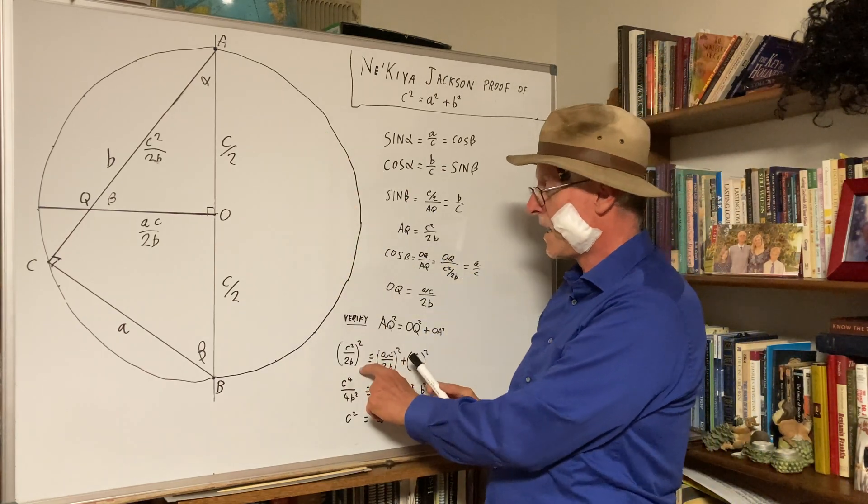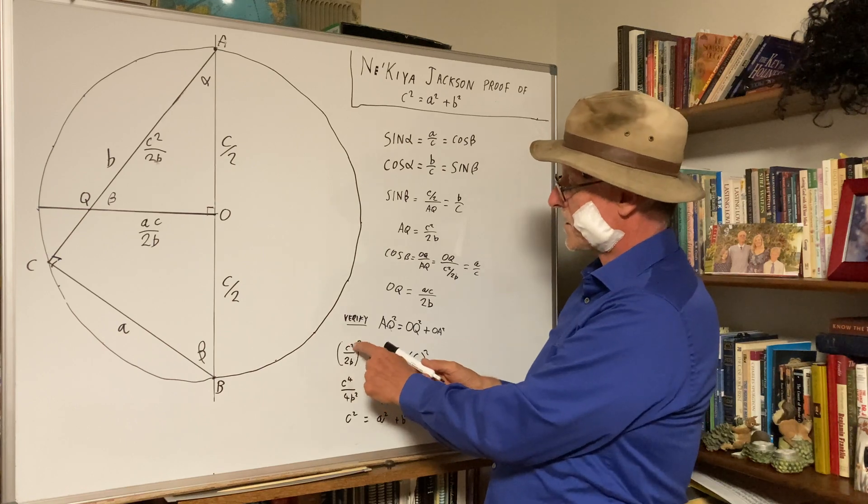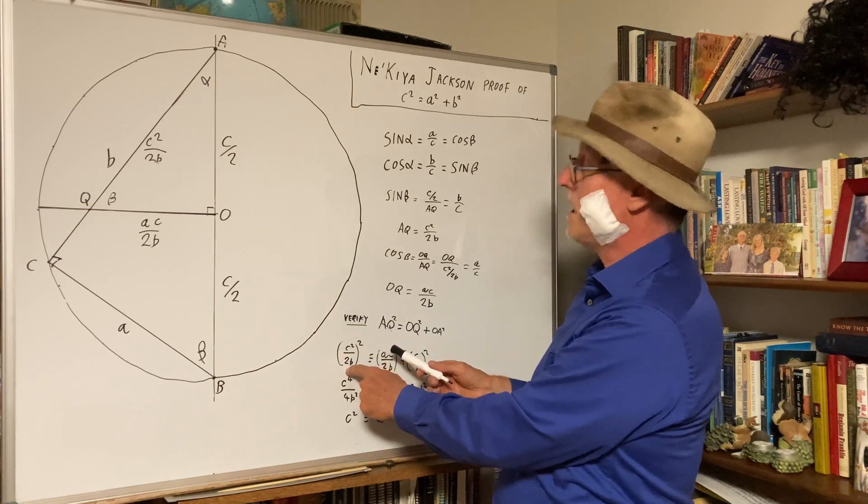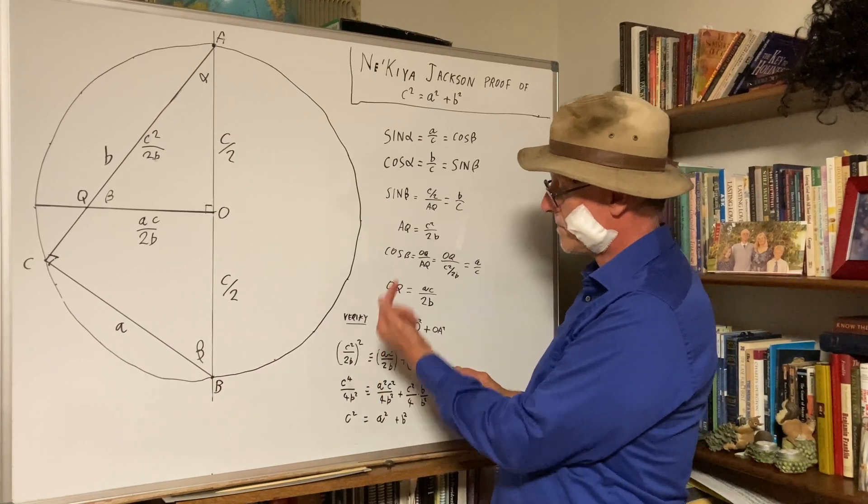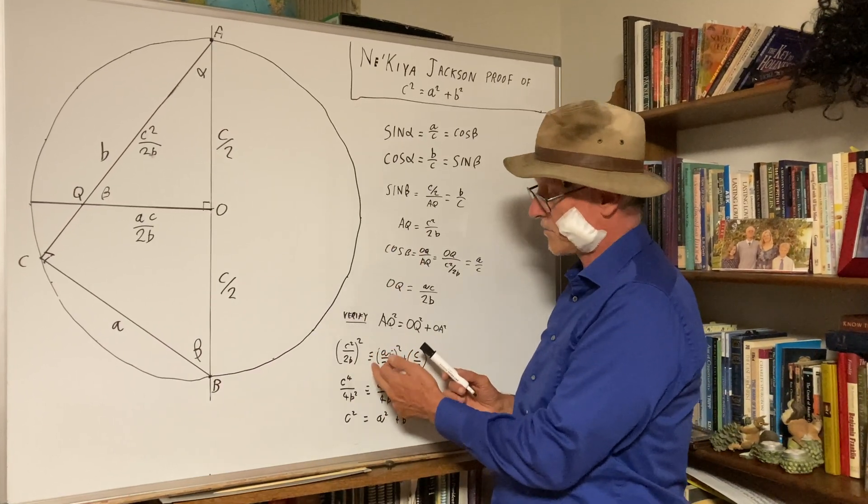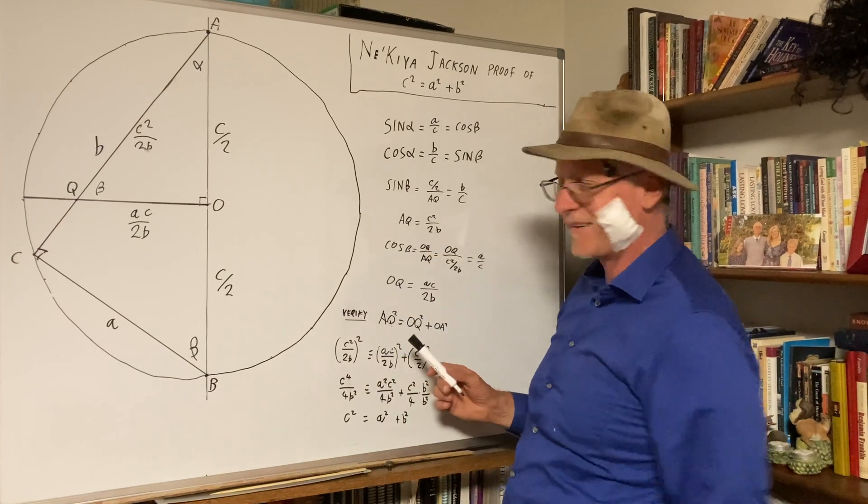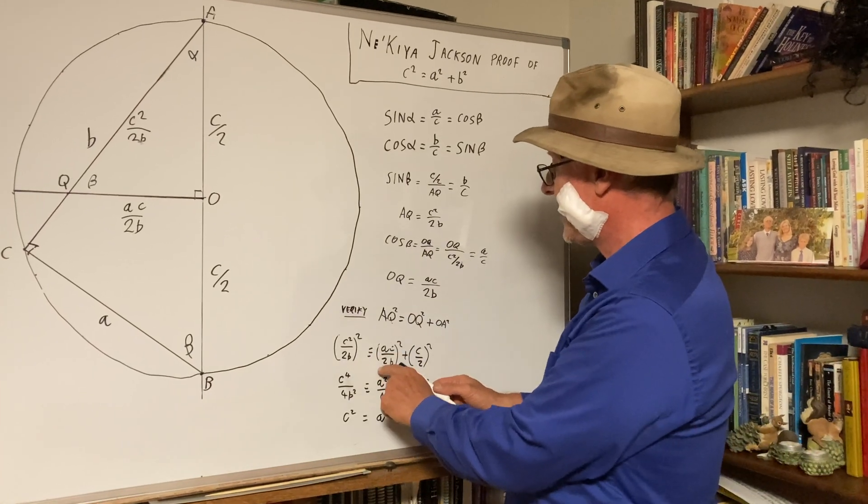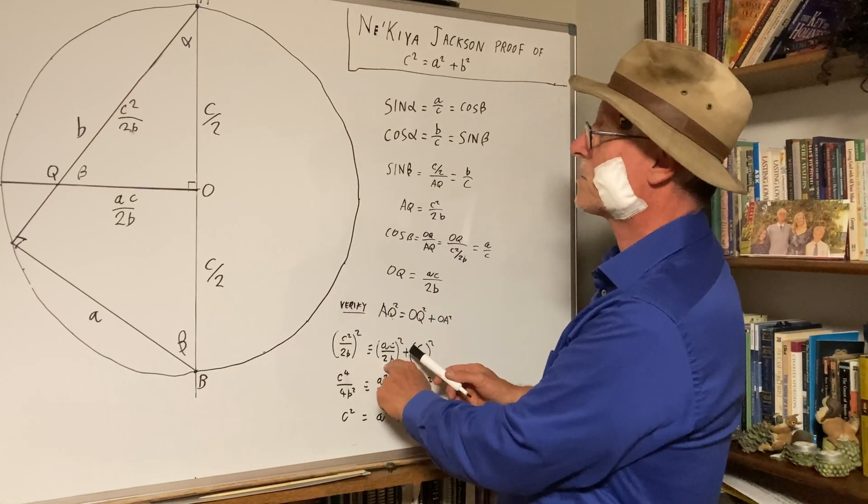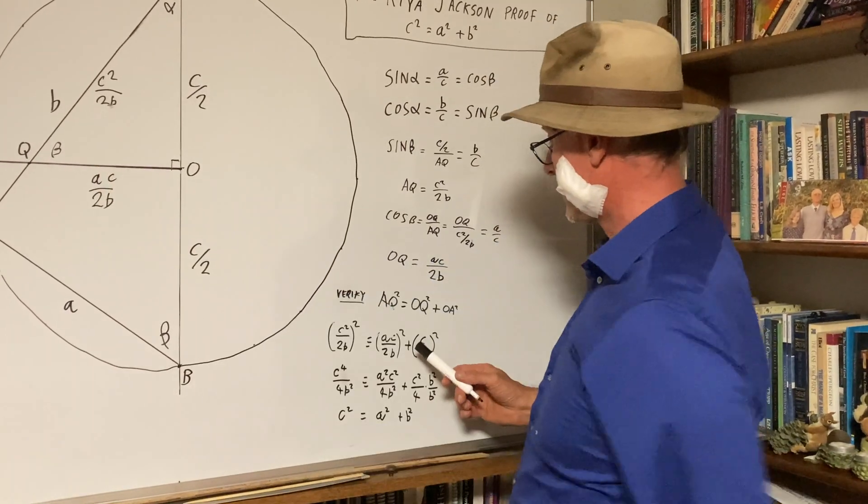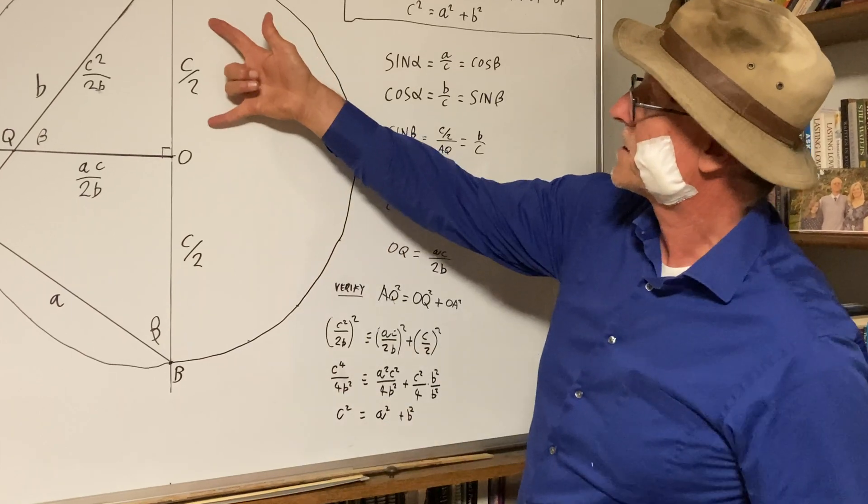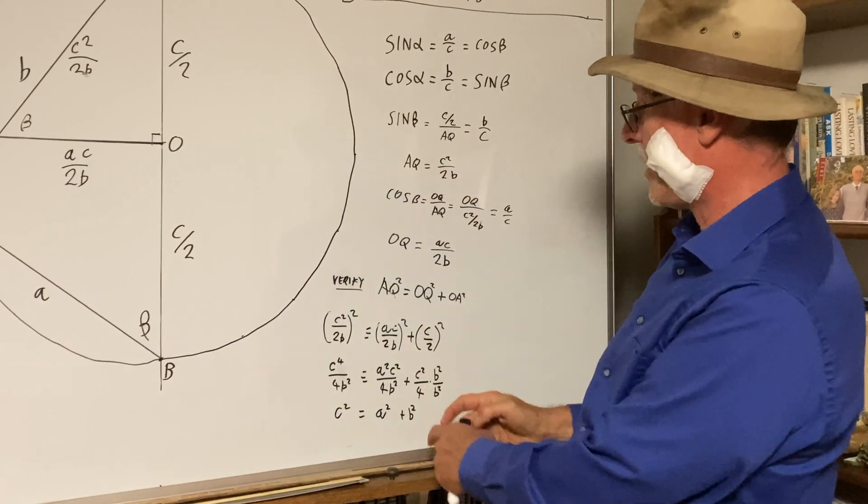Well, you plug that in. AQ squared is C squared over 2B, square it, and that must equal AC over 2B squared, that's this quadrant, plus C over 2, the whole thing squared.